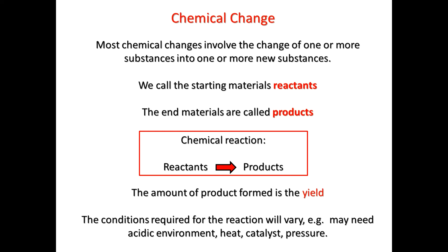What is a chemical change? It basically is a change of one or more substance into one or more new substances — making new materials from what we call the reactants or the starting materials. These starting materials will react together to give you a product. So a chemical reaction in very simple terms is given as reactants going towards products.